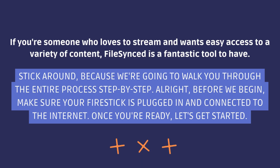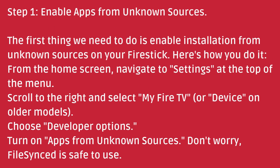All right, before we begin, make sure your Fire Stick is plugged in and connected to the internet. Once you're ready, let's get started. Step one: enable apps from unknown sources. The first thing we need to do is enable installation from unknown sources on your Fire Stick.